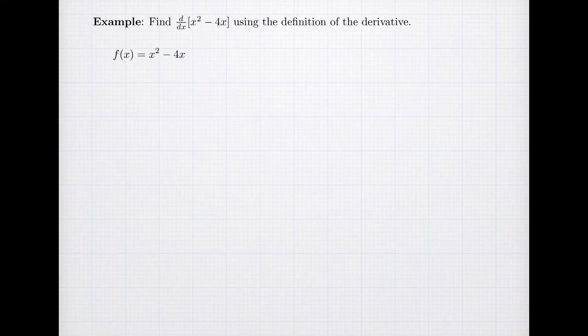So first, we're going to identify our function. Let's give it a name. Let's call it f(x). We could call it something else, but f is a pretty common name. And our function is to take x, square it, and subtract 4x.